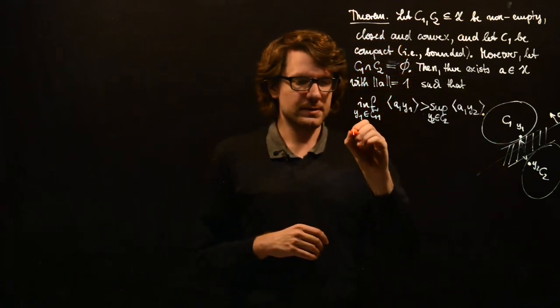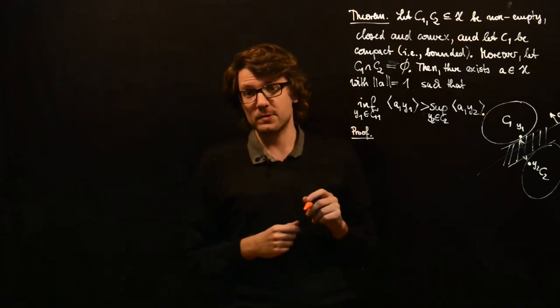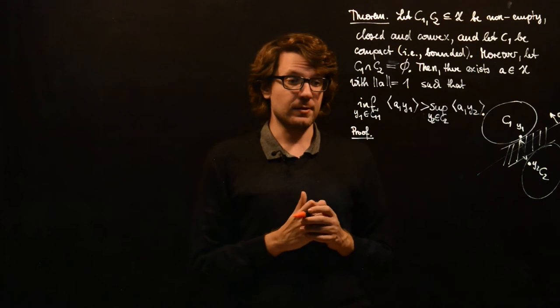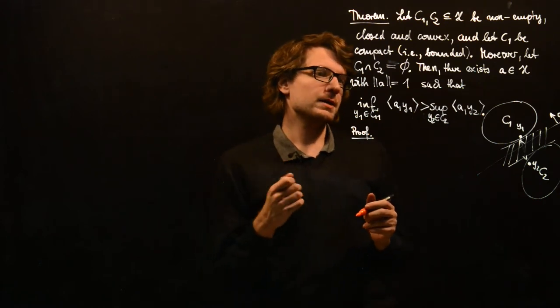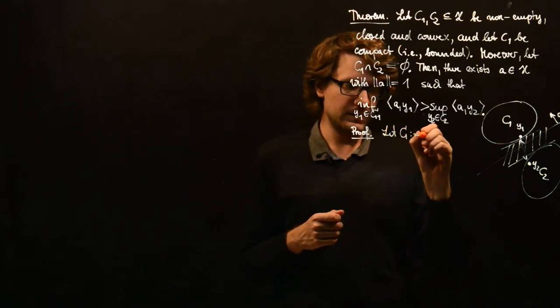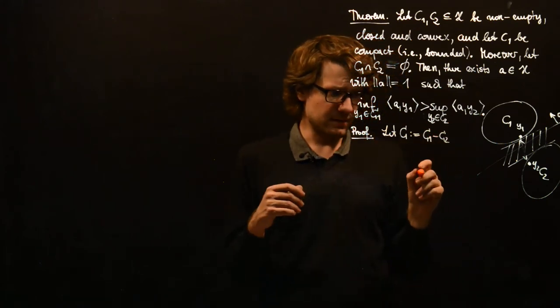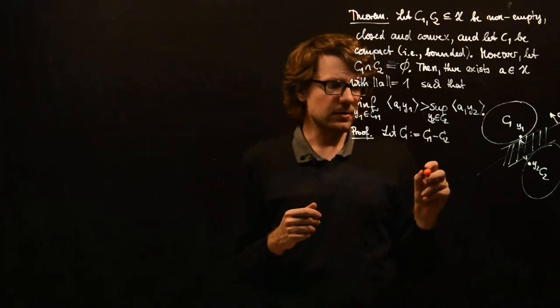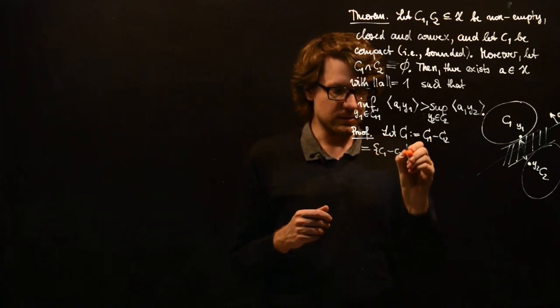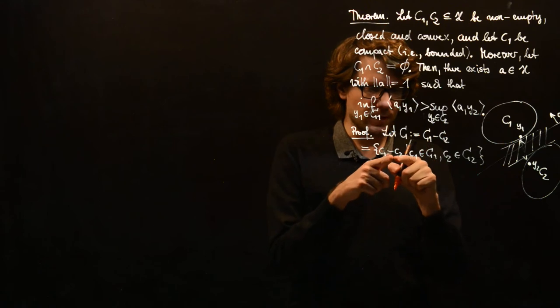Now let's get to the proof. And the idea is, of course, to use the separation of a point from a convex set, which was given by the previous theorem. And the trick here is that we define a new set C to be C1 minus C2. And the minus here is in the similar sense to the Minkowski sum. Just here we have C1 minus C2 with C1 in C1 and C2 in C2. For the Minkowski sum we have plus here.